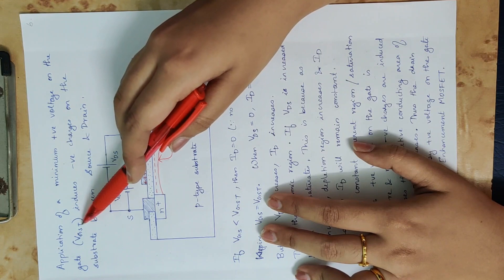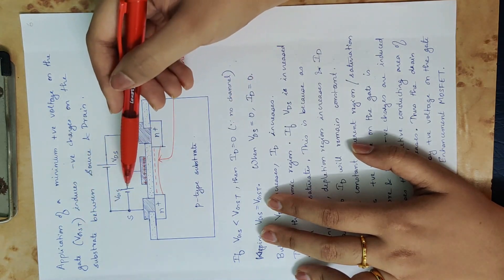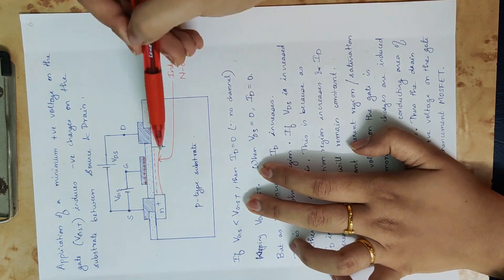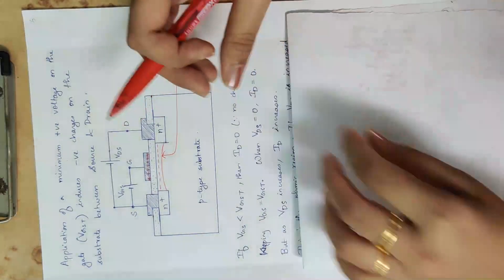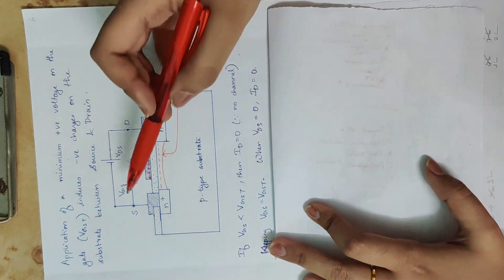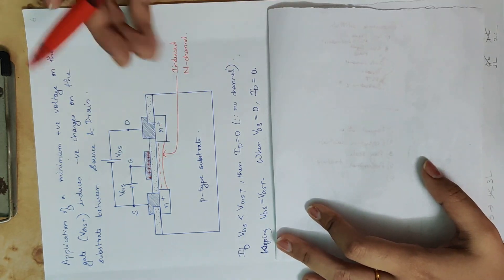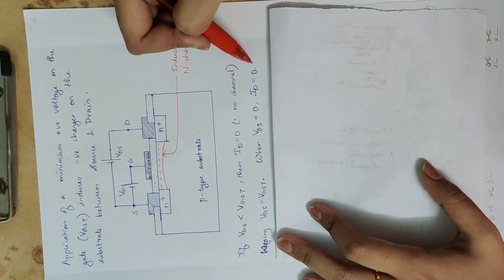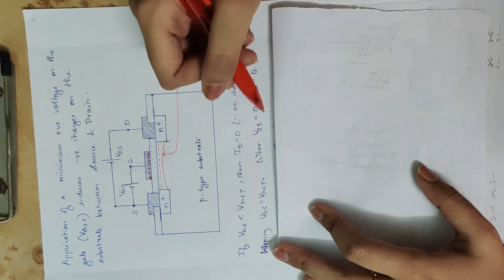A minimum positive voltage is required to form the channel — this is called threshold voltage, VGST, where T means threshold. That threshold voltage is required. If VGS is less than VGST, the channel is not fully created, electrons are not coming, and drain current ID is zero. When VGS is greater than or equal to VGST, the channel is created and VDS drives current.